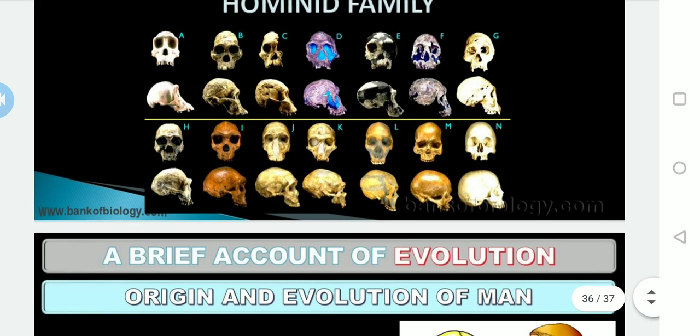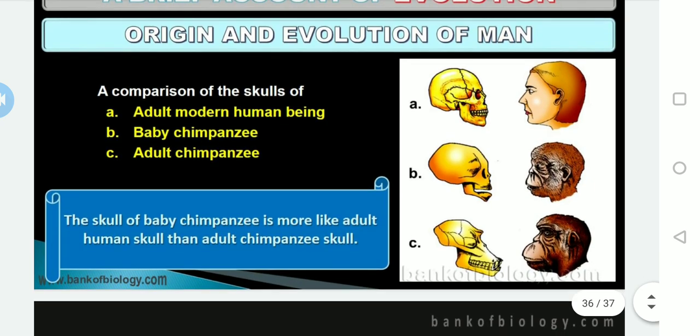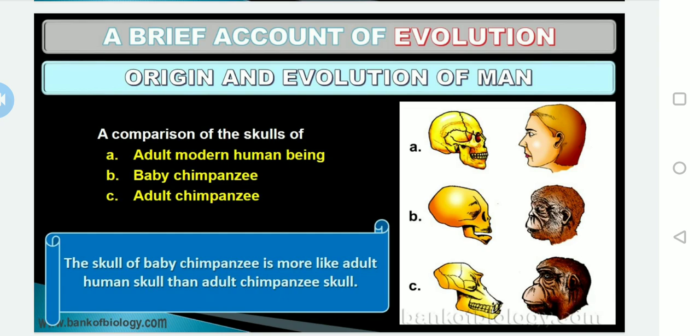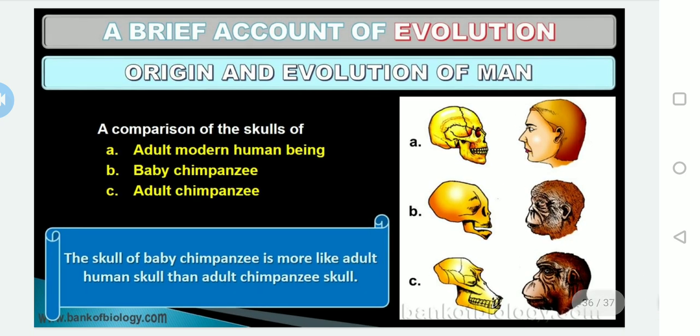The average human brain is 150 mm wide and 167 mm long. When comparing skulls, note that the skull of a baby chimpanzee is more like an adult human skull than an adult chimpanzee skull. Based on these comparisons and similarities, we can conclude how the origin and evolution of human beings happened step by step. These are all the details for Chapter 7: Evolution.